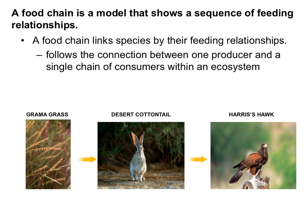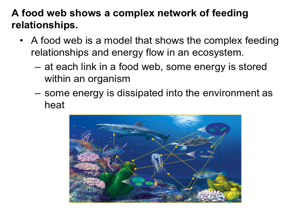A food chain links species by their feeding relationships, following the connection between one producer and a single chain of consumers within an ecosystem — this shows how energy is transferred through an ecosystem. Food webs are models that show the complex feeding relationships and energy flow in an ecosystem. At each link in a food web, some energy is stored within an organism and some energy is dissipated into the environment as heat, used by the organism to run its body rather than passed on.